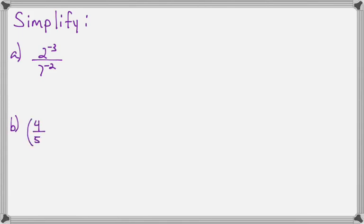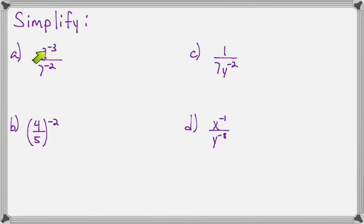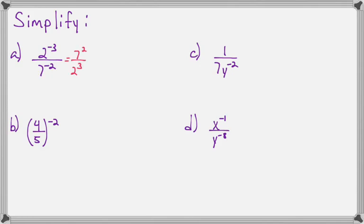So for practice, let's simplify a few more together. I have 2 to the negative 3rd over 7 to the negative 2. Both of these have negative exponents, so they'll both have to move. 7 to the negative 2 has to go in the top, and 2 to the negative 3 has to go to the bottom, and now they're both positive exponents, so I now have 49 over 8.